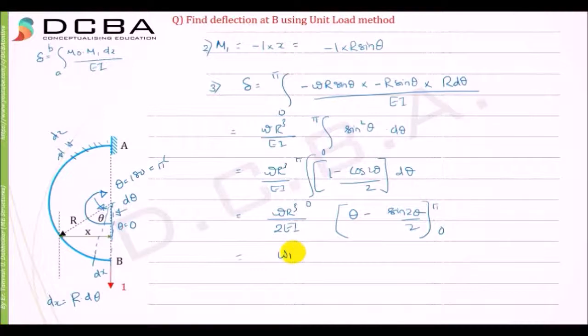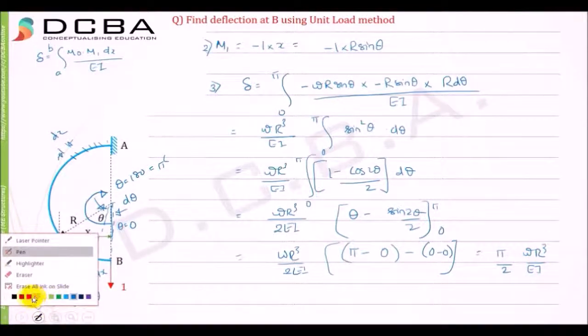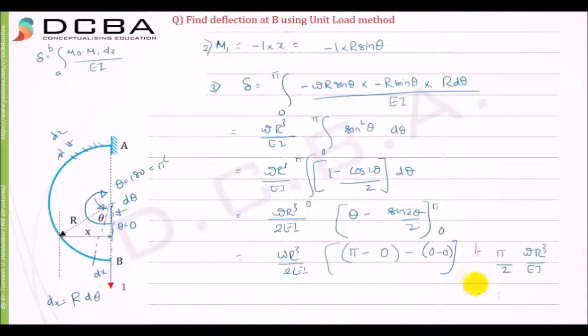When we put the limits, this is pi minus sin 2 pi, which is 0, minus 0 minus 0. So it is pi by 2, wr cubed upon EI. This is the equation for the deflection of this semicircular beam.